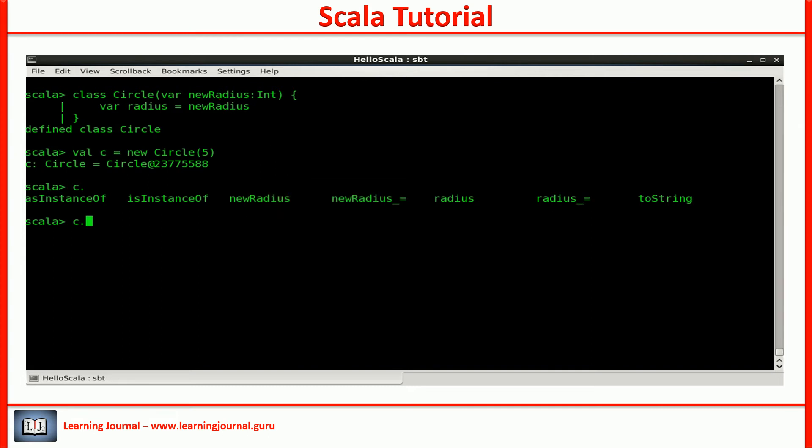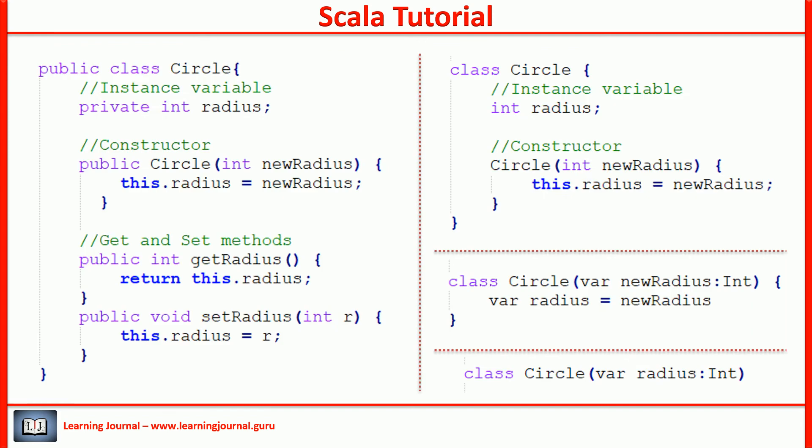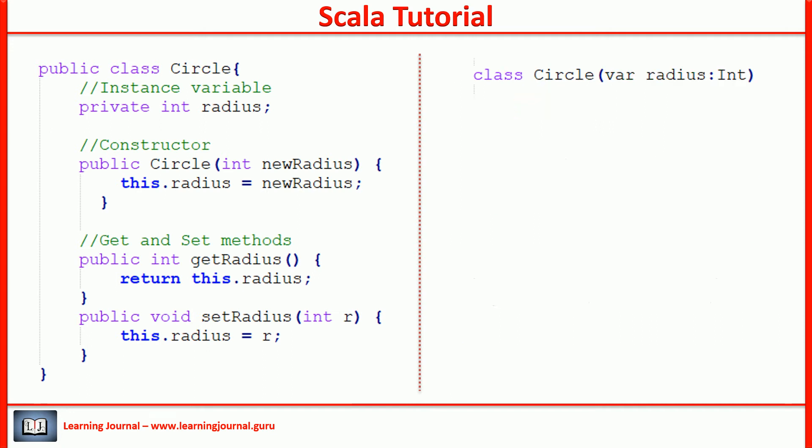What does that mean? That means there was no need to declare this radius and initialize it with the constructor parameter. I should have declared my class like this. That's it. And Scala takes care of declaring a variable for radius. Initialize it with the constructor parameter. And also create a reader and a writer method. So the one line of Scala code is equal to those several lines of Java code. Amazing, isn't it?